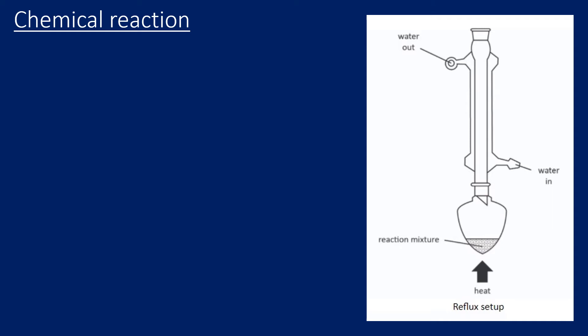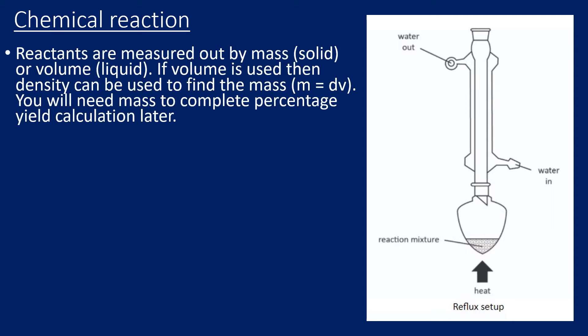In the chemical reaction stage, the first thing we need to do is measure out our reactants — either by mass if the reactant is a solid, or by volume if it is a liquid. Later, when we do the percentage yield calculation, we will need the mass, so it's common to be given the density and calculate mass using: mass = density × volume.